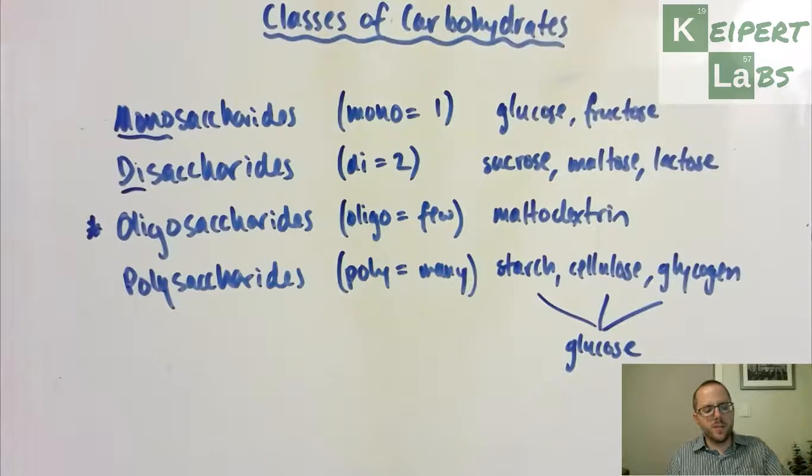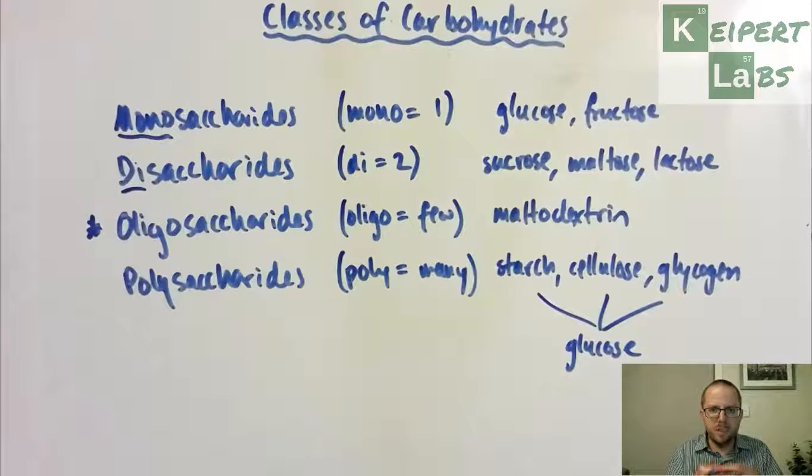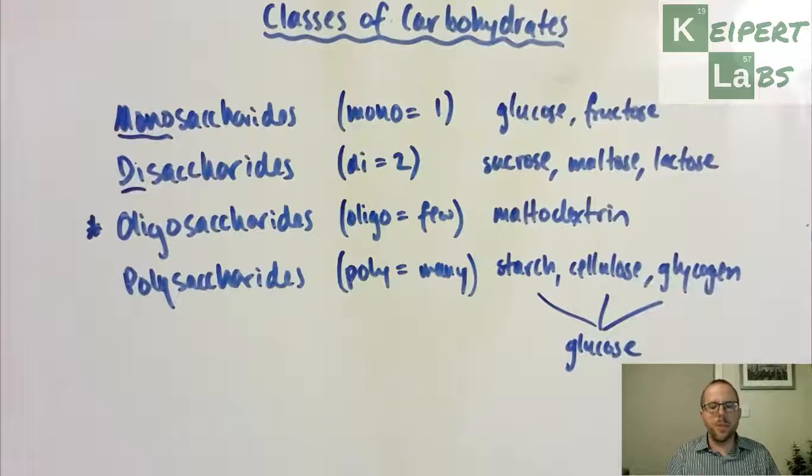You can see that we've got these four main categories of saccharides based on their size and how many of these building block units make them up, as well as some common examples we'd come across of each. Thanks very much for watching. Bye for now.